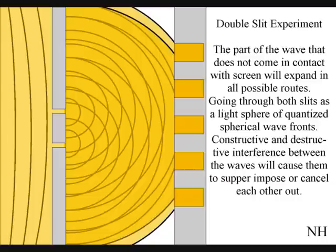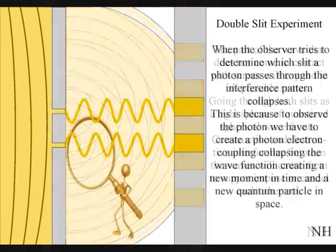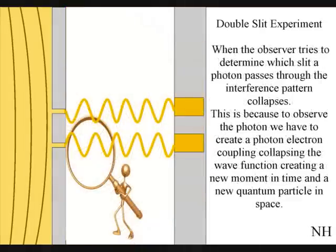When the observer turns on a detector to determine which slit a photon passes through, the interference pattern collapses. This is because to observe the photon, we have to create a photon-electron coupling, collapsing each wavefront into a new quantum particle that will have its own position in space and time.